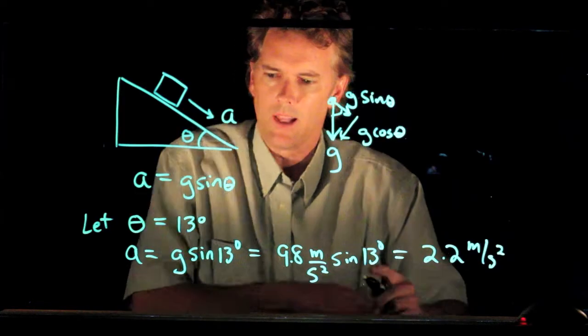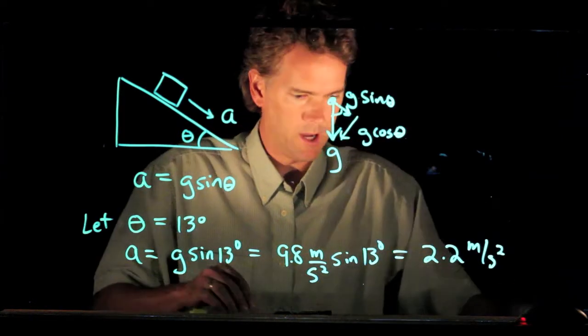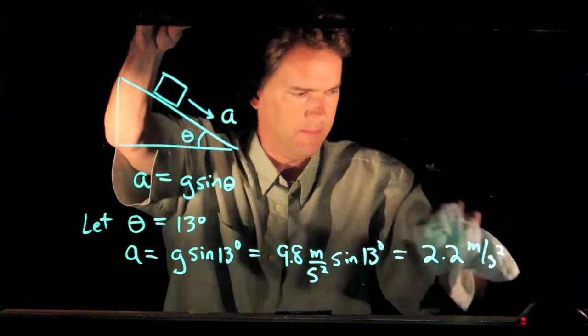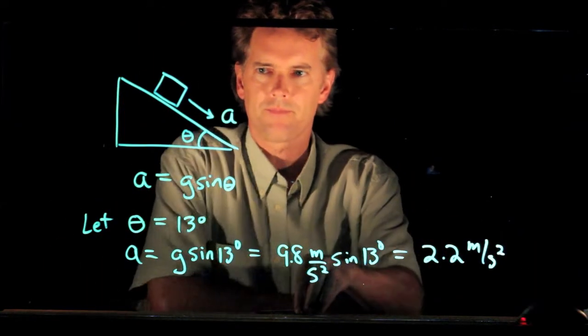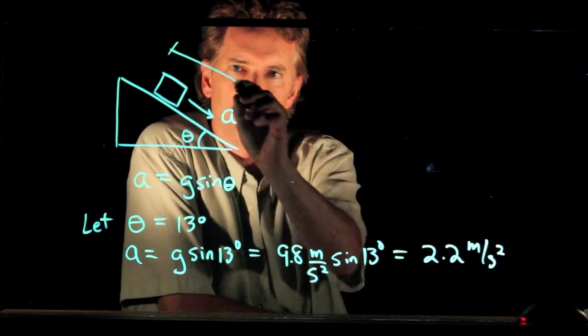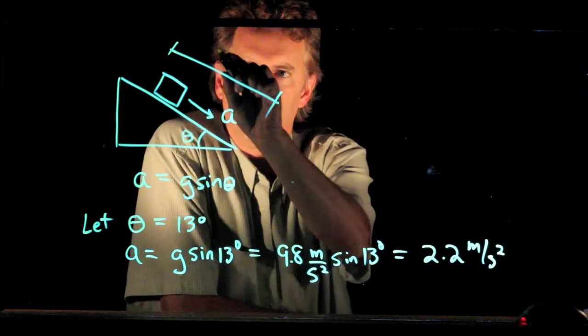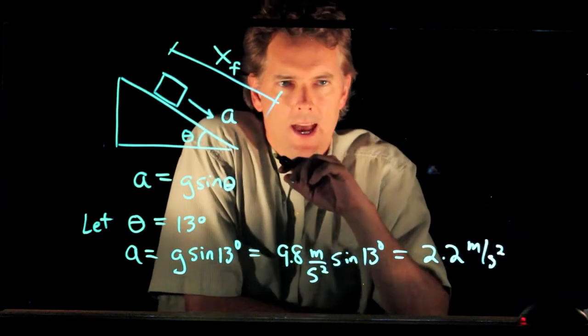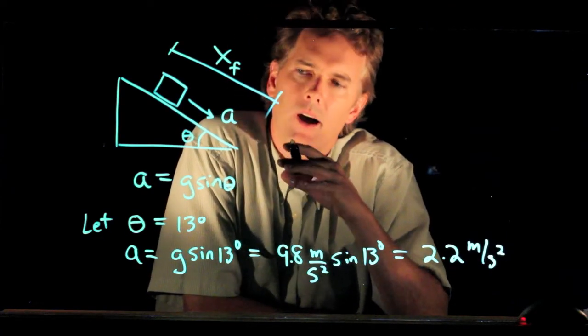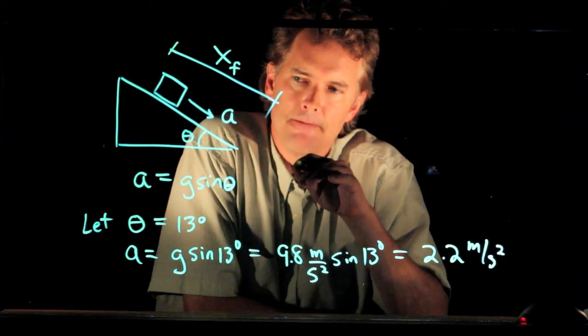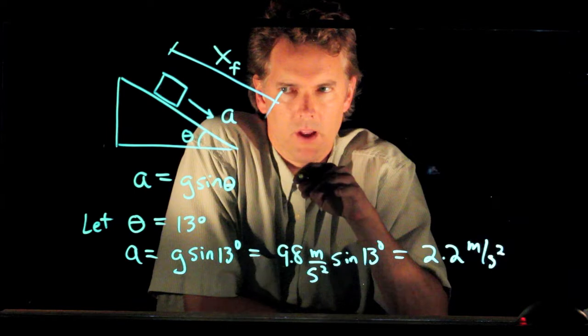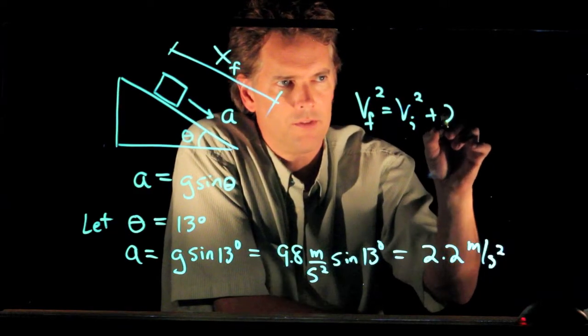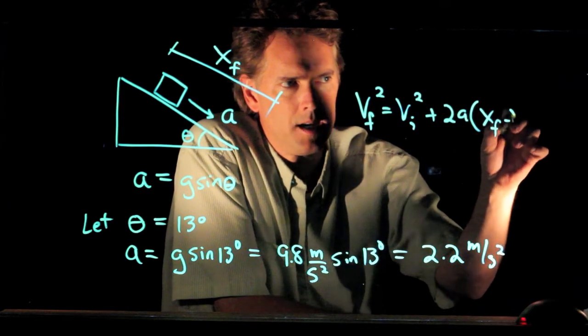Okay. Now, let's say we go down this run for a while, and we want to calculate the maximum speed that we can attain. And let's say we know how long the run is. So if this distance here that it goes down the run is x, let's just call it x final, then we have some equations that tell us about what the maximum speed is going to be. And those are our kinematic equations. And one of those equations looks like this: Vf squared equals vi squared plus 2ax final minus x initial.